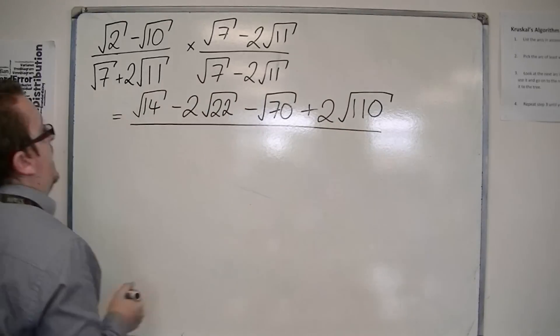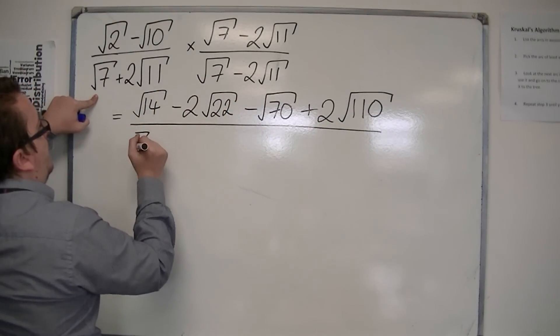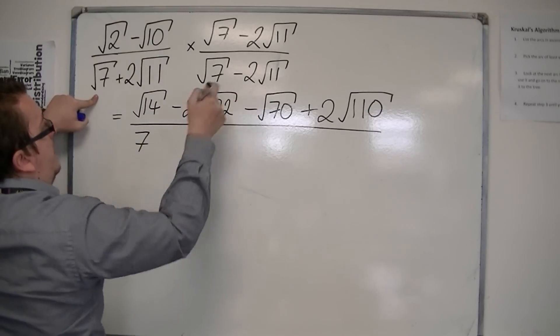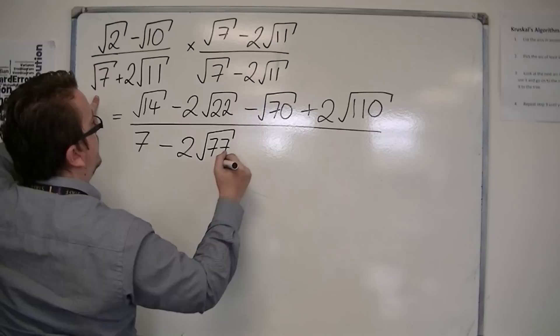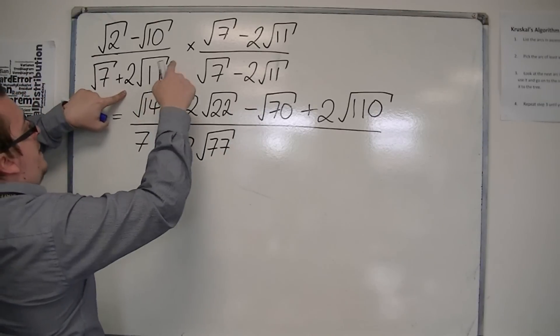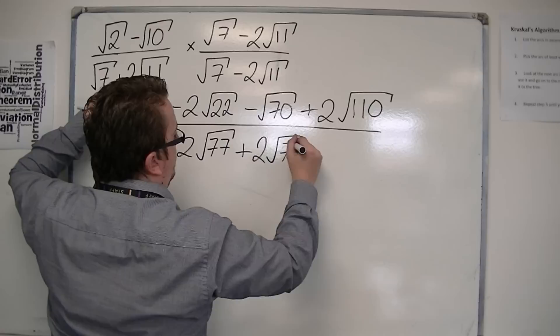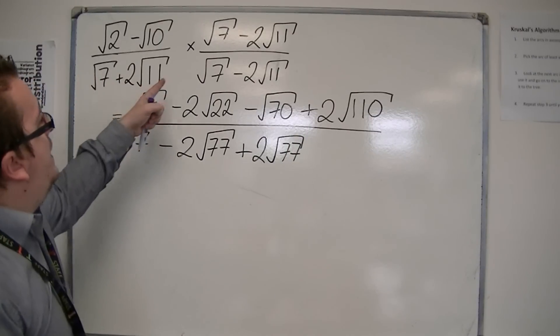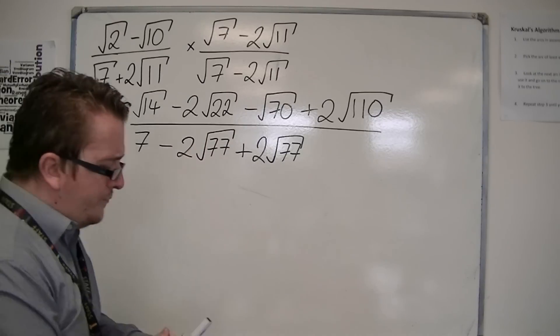For the denominator, we have root 7 times root 7 is 7. Root 7 times minus 2 root 11 is minus 2 root 77. Then you've got 2 root 11 times root 7 is plus 2 root 77. And then finally, you have 2 root 11 times minus 2 root 11.